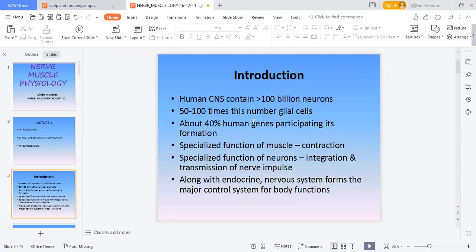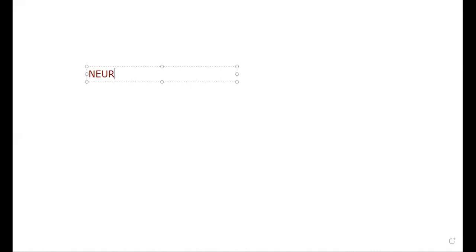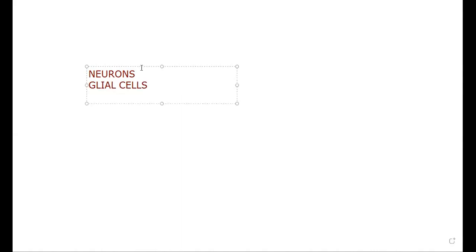We have two things to understand: we have neurons and we have glial cells. These are the two types of cells involved in nerve physiology and the central nervous system.